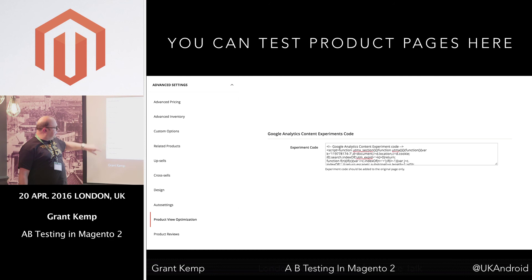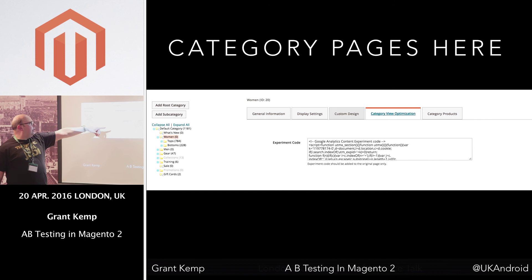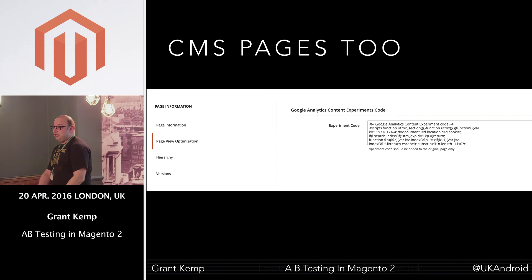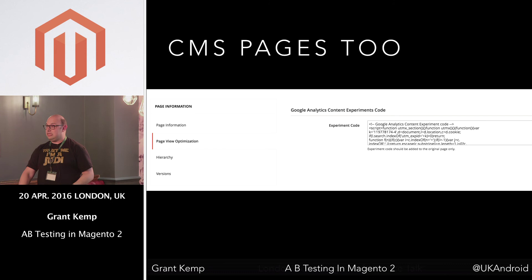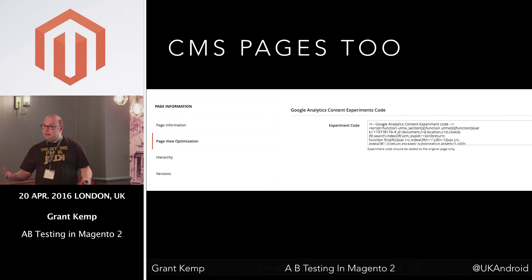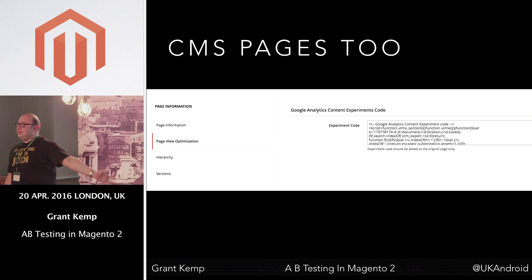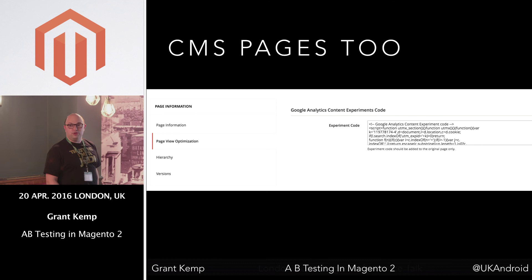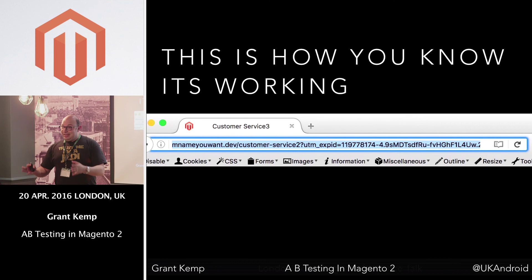So this is where you add it to your product pages: advanced settings, product view optimization, just paste your code in there. Category pages — showed you already. And CMS pages. So you can pretty much test in Magento 2 right now. You can go do it tonight if you'd like to — literally test any CMS page, your product page, any category page. When it comes to executing it, you've got a phenomenal, amazing, really powerful and completely free solution right there at your doorstep.